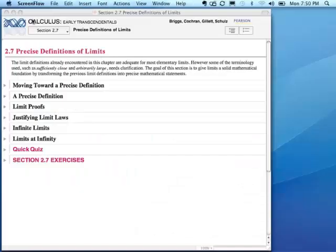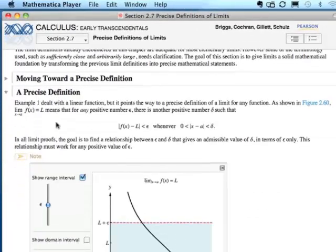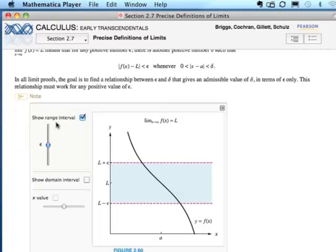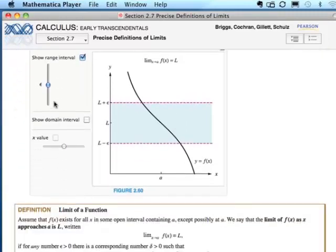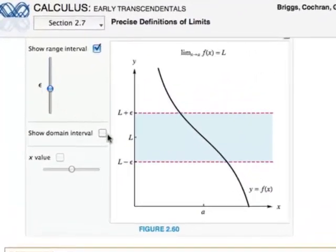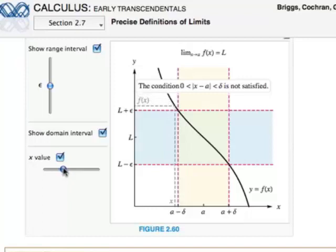Let me give you a quick demo. Here we are in section 2-7, the precise definition of limits, and let's open up the definition section. We can scroll through the content, we can see some textual material, we can see the interactive figure appearing just before the definition. That interactive figure allows a student to start investigating what epsilon is, what delta is, the condition on x. If x is outside of the delta neighborhood, notice the annotations and the figure change, moving back and forth.